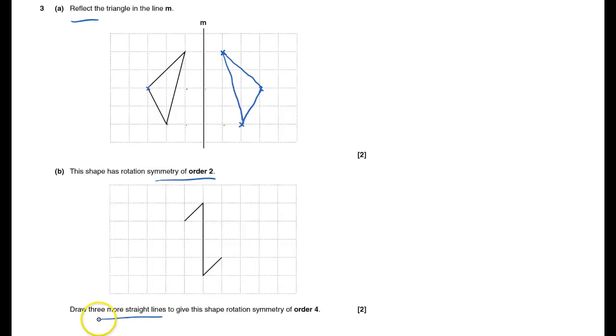And we'll draw three more straight lines to give it a rotational order of four. So it's got to spin round and do itself four times. Do that. Again, it's worthwhile tracing it, but it will go like that and that and that. If you can imagine it will then spin around and that'll be two marks and question three done.